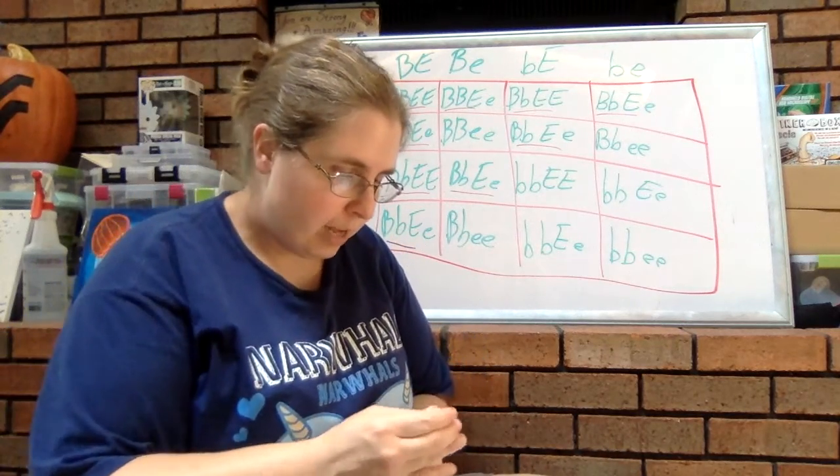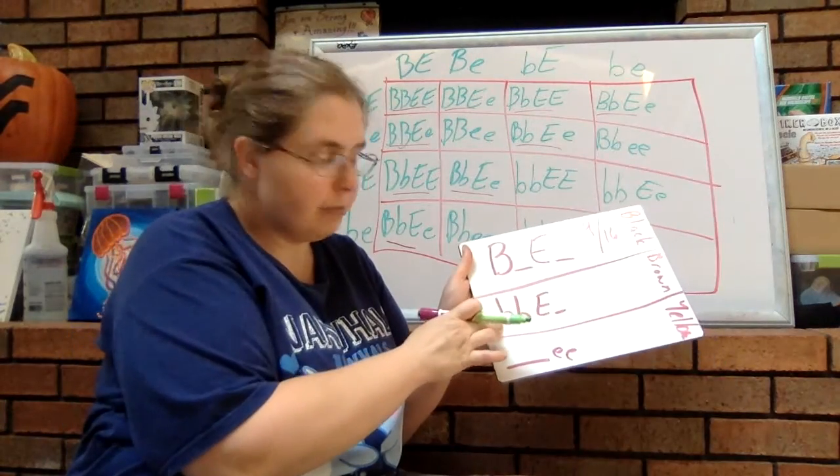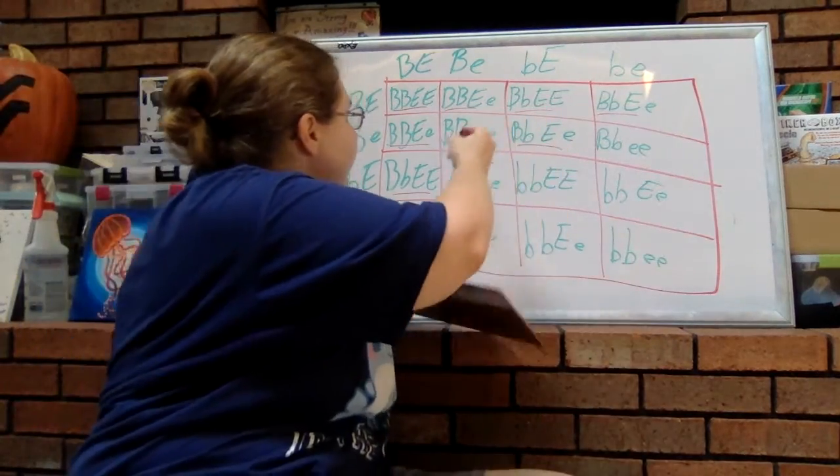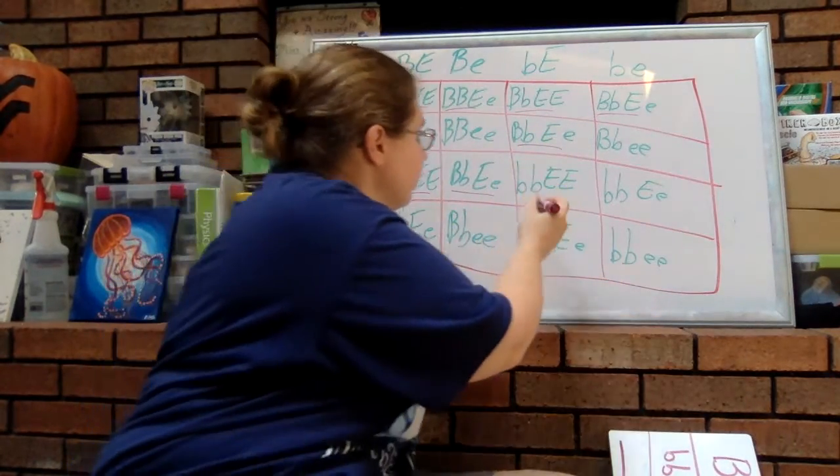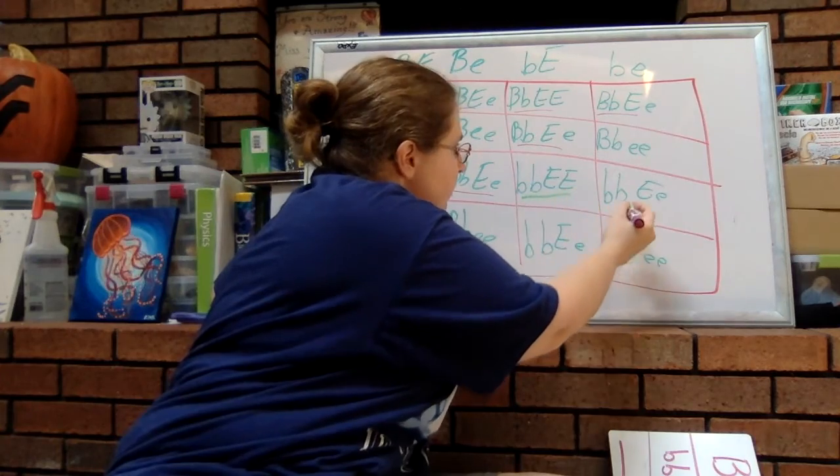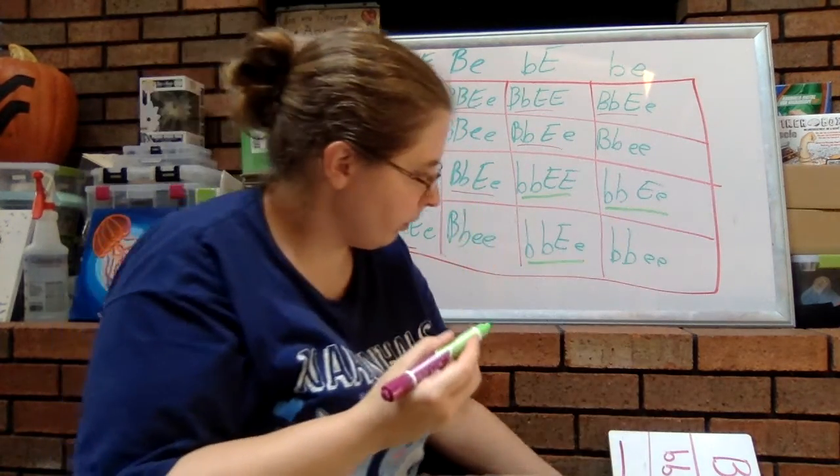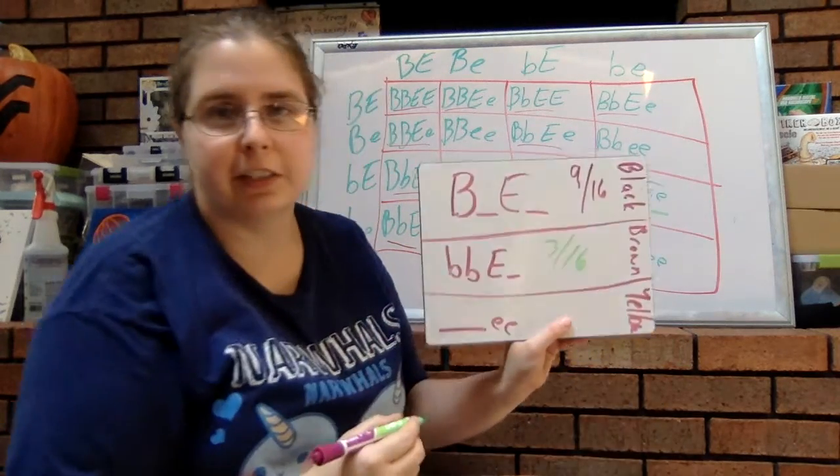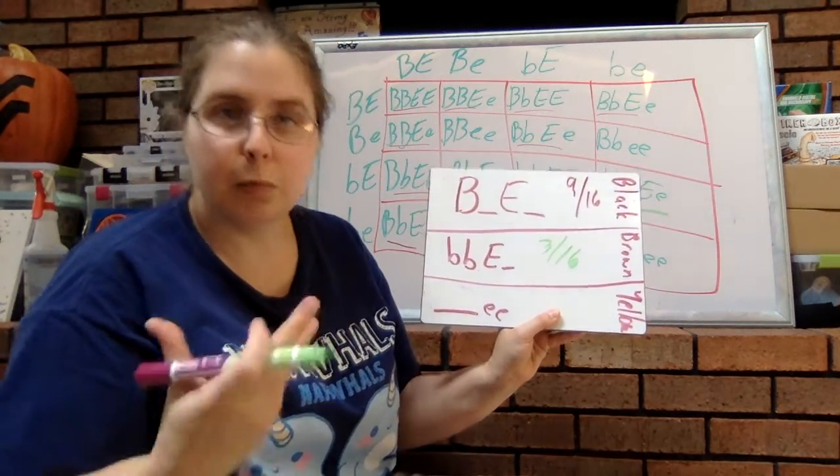All right, well how about for brown lab? That means that we're recessive for the first trait, but dominant for the second. So we have one, two, three. Three, a three out of 16 chance, or three sixteenth chance of being a brown lab.